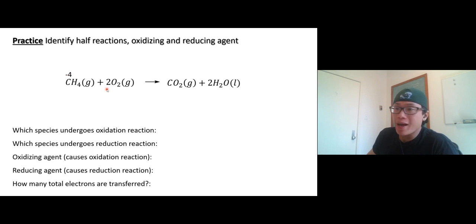So carbon minus four, and oxygen gas, elemental oxygen, is zero. On the right side, the oxidation number of carbon has to change, so start with the oxygen here. Oxygen is negative two, two of them is negative four, so carbon is plus four. Water, so oxygen is negative two.